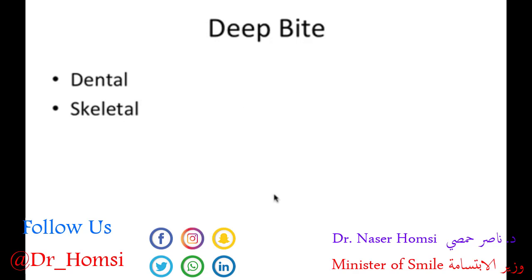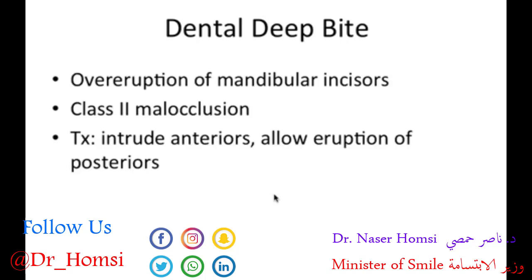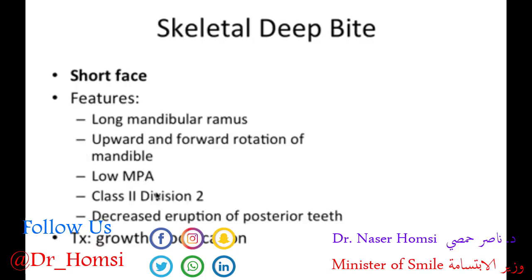Now, deep bite is the other end of the spectrum — also with dental and skeletal variations. For the dental type, we have over-eruption of the mandibular incisors, where they pierce into the palatal mucosa. This would be a class 2 malocclusion. The treatment is to intrude the anteriors and allow eruption of the posteriors to open the bite — remember, eruption of the posteriors is linked to opening a bite.